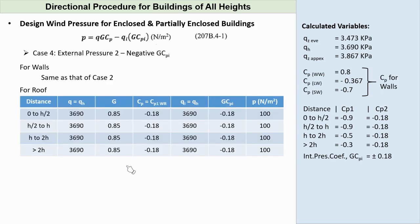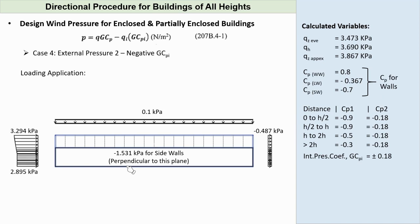Case 4, External Pressure 2 minus Negative GCPI. Wind pressures for walls are the same as in Case 2. But for the windward roof, we will use the second value of external pressure CP2, which is negative 0.18. By doing so, we get P for the roof equals positive 100 pascals. Knowing all the surface pressures, we can also draw the wind action for Case 4.